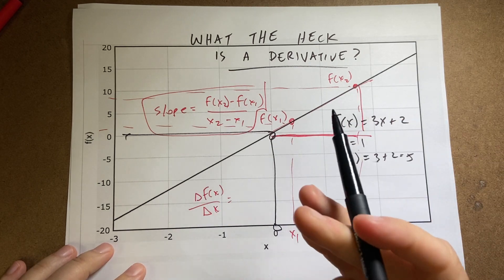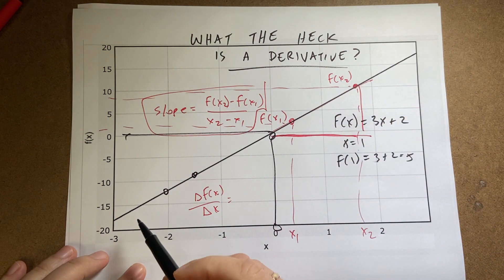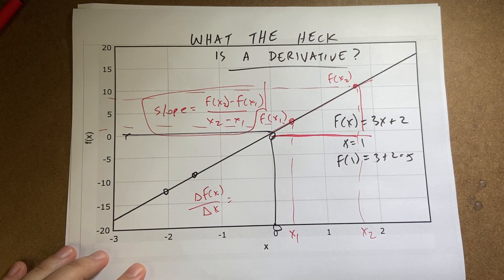And in this case, this is a straight line. If I found the slope for these two points, it would be the same for those two points. The slope of this line is constant. Okay, but that's slope.